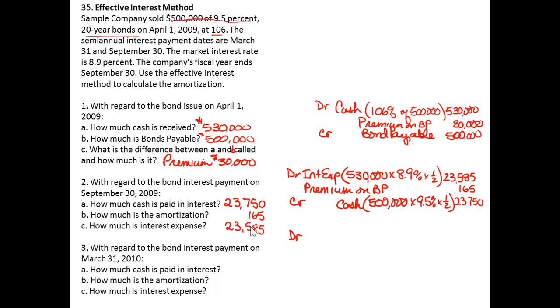So in number three, for the second interest payment, the debit to interest expense will be the shrinking carrying value: $530,000 minus $165 gives us the new carrying value, times the market or effective rate of 8.9% for half a year. So if I do my math, that comes to $23,578.